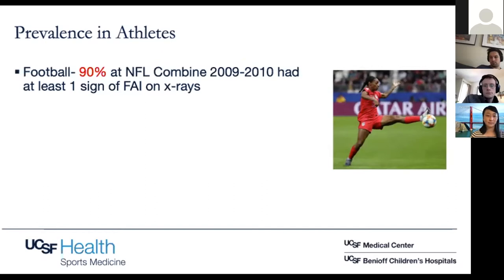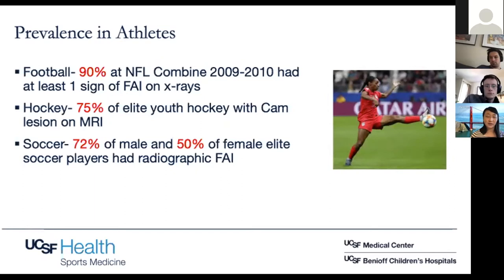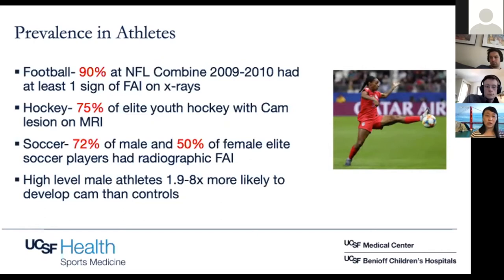A study looking at hockey players found 75% of elite youth hockey players had cam lesions on MRI. Looking at soccer players, about 72% of male and 50% of female elite soccer players had at least radiographic FAI. Another study found that high-level male athletes were about two to eight times more likely to develop cam lesions than controls.